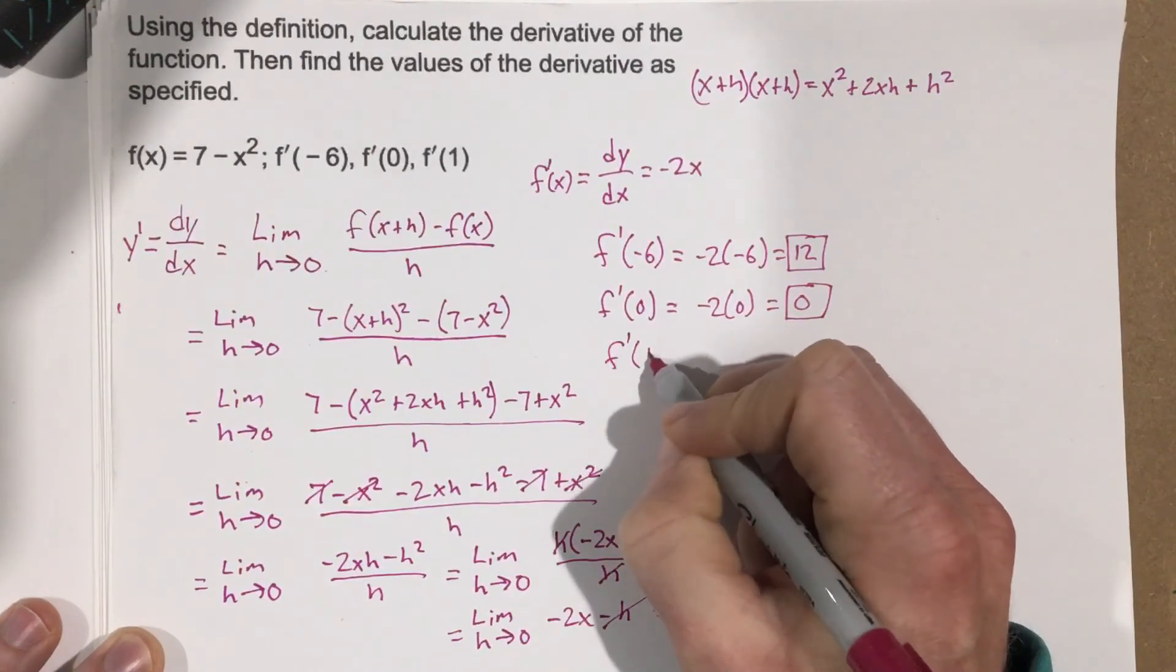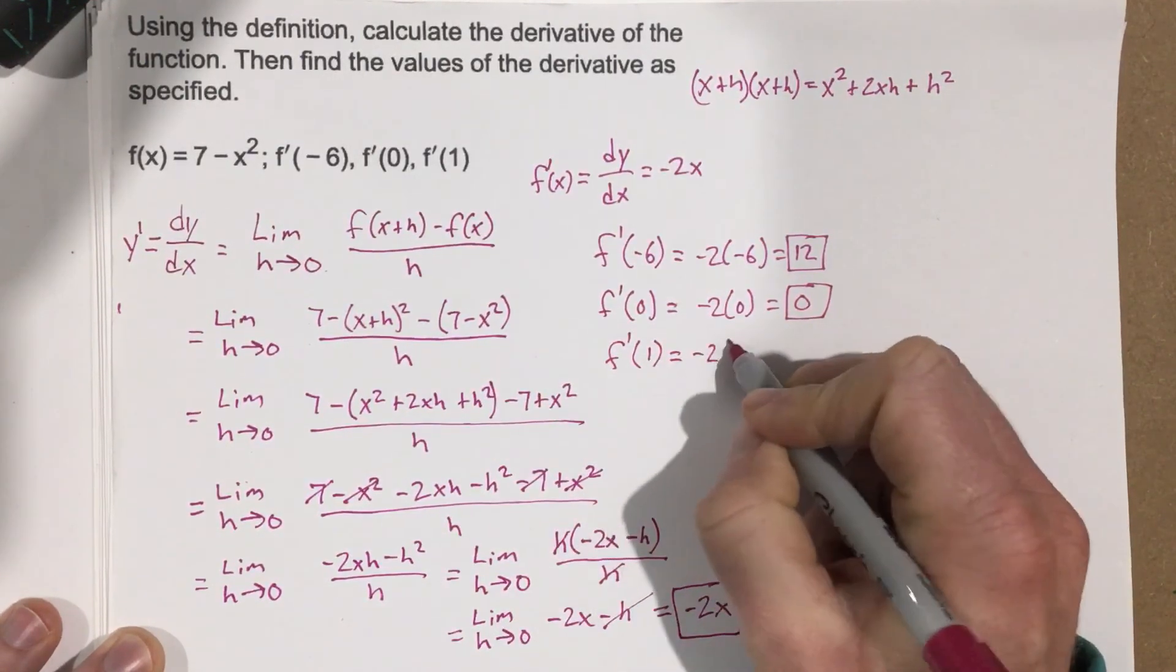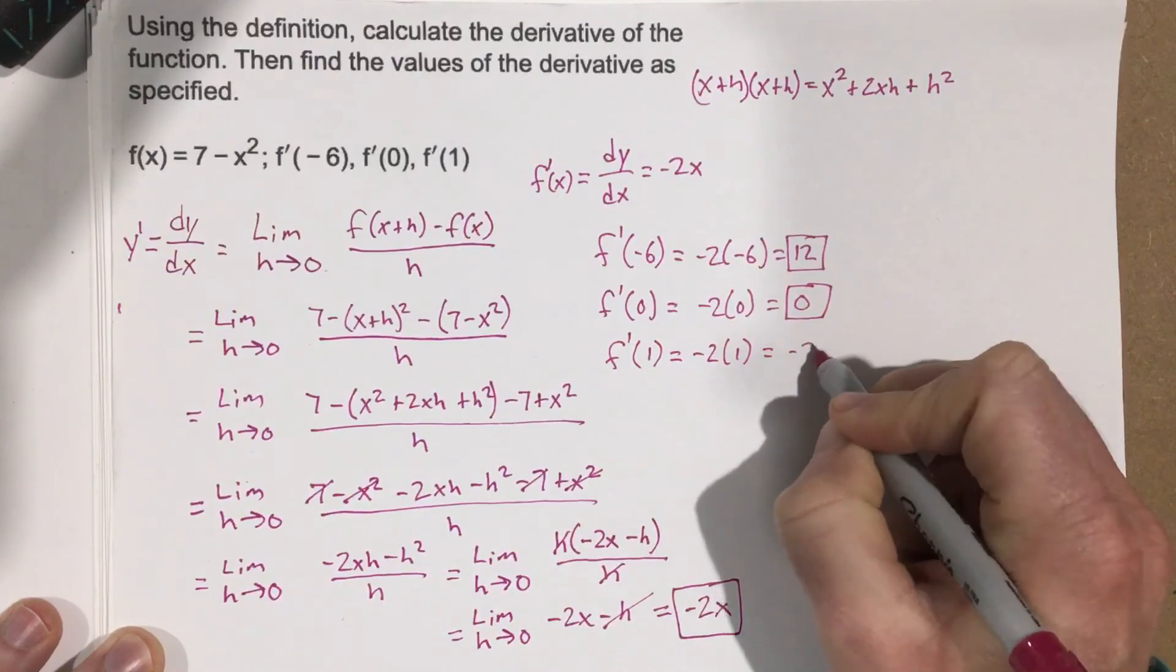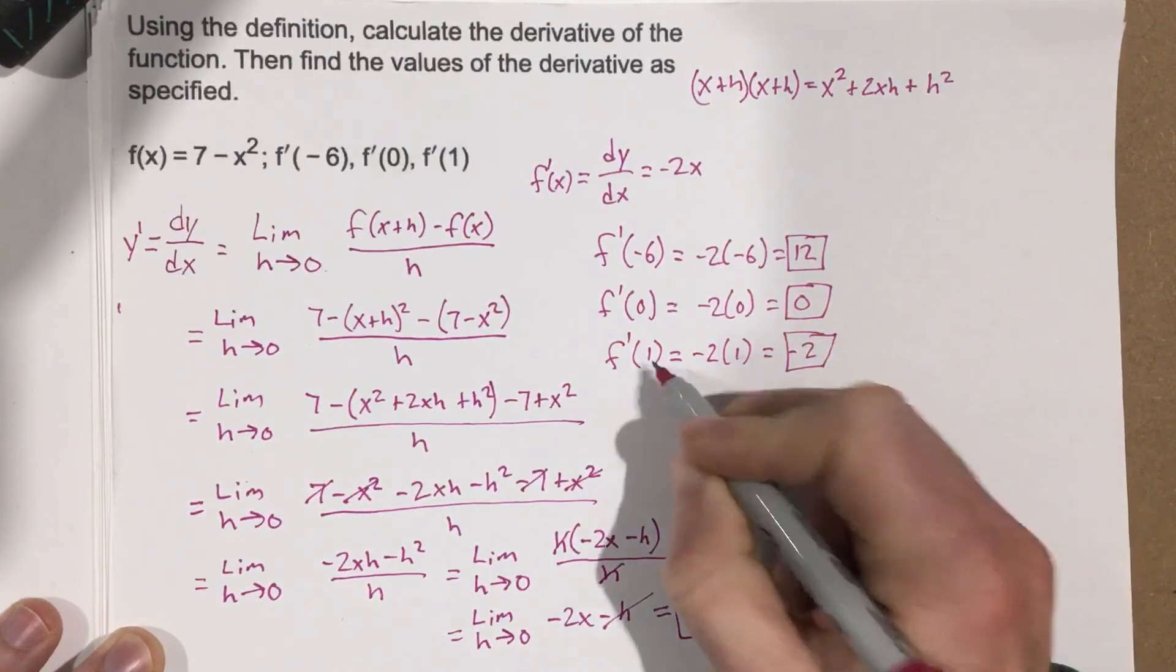f prime of 1: negative 2 times 1, that's negative 2. So, the slope is negative 2 at x equals 1.